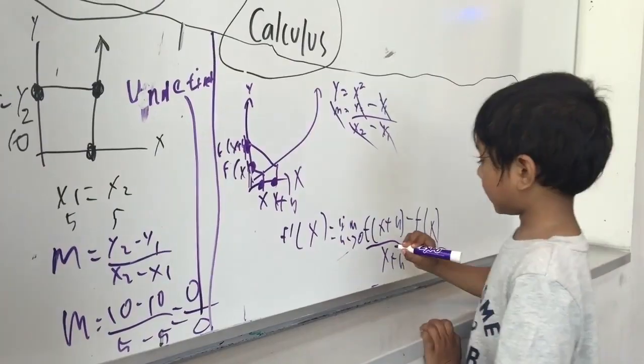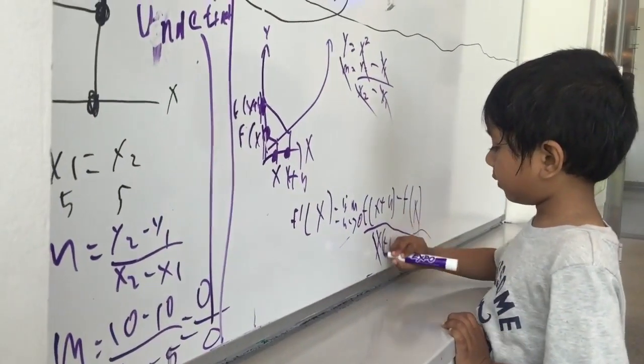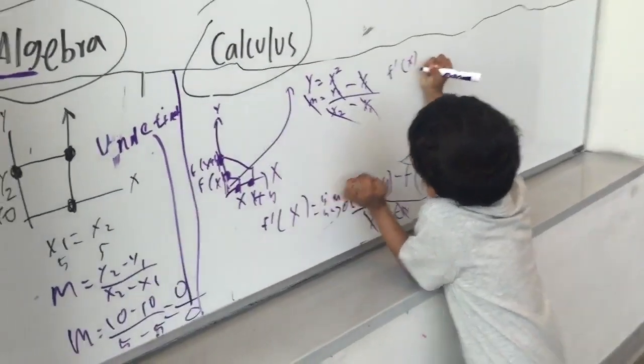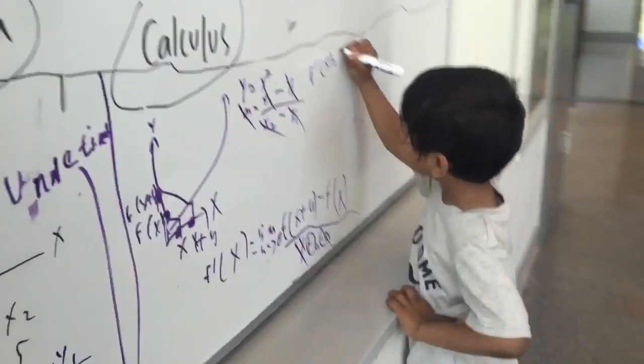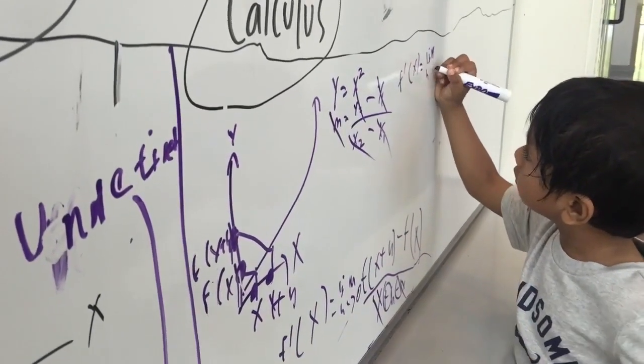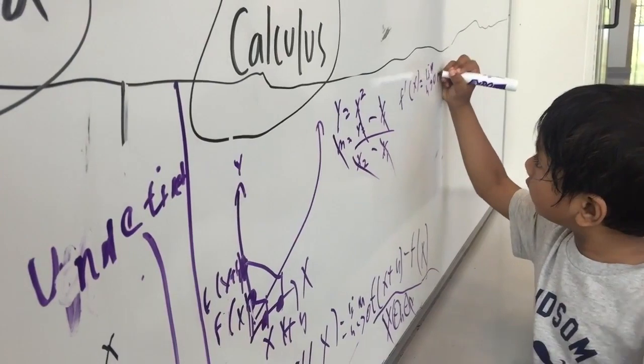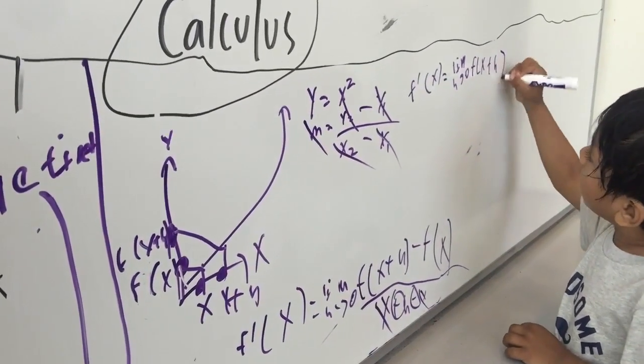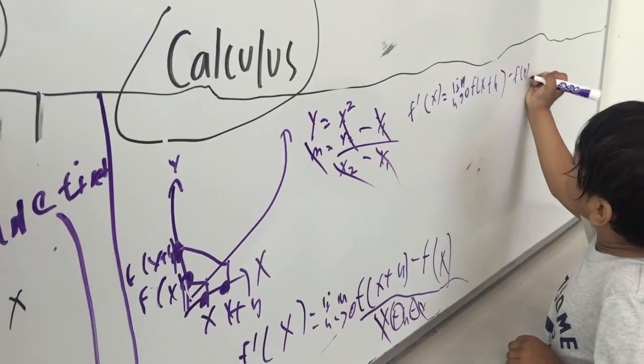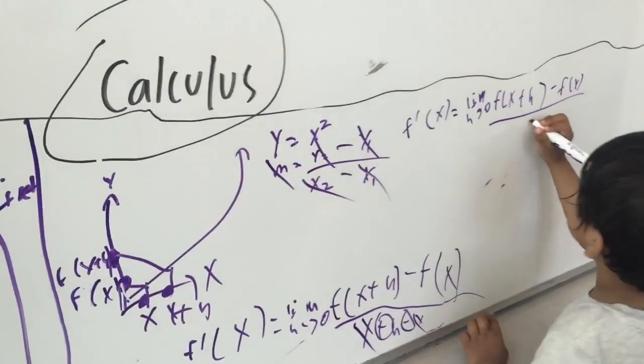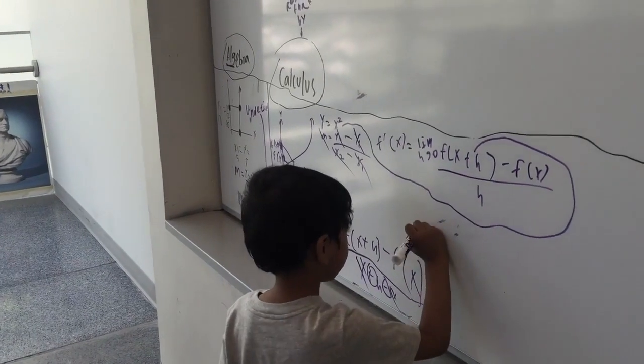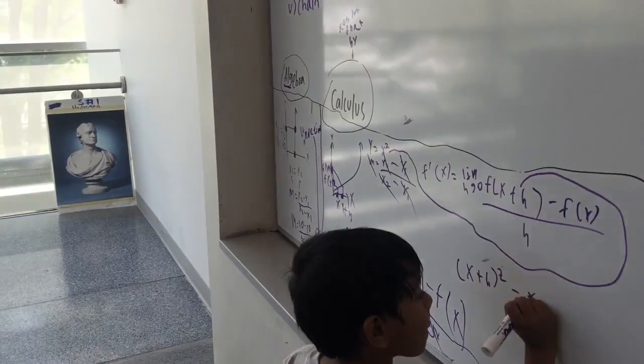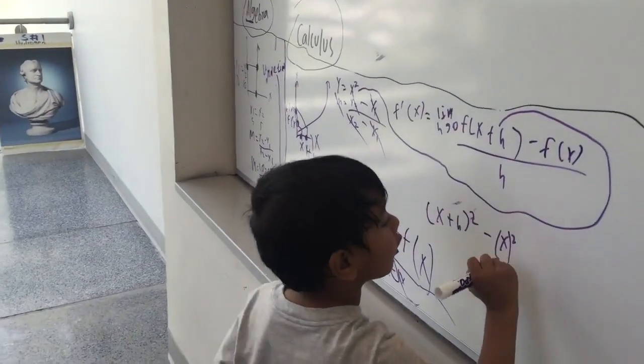So cancel the x's because they are positive and negative. The limit as h goes to zero, f of x plus h minus f of x over h. So now I have x plus h squared minus x squared over h.